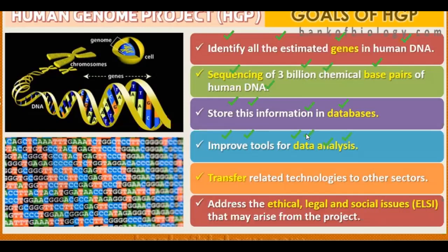The goals of HGP were set approximately 20 years ago. There were many dreams, and with their goals, almost all of these goals are true today. Women genetics is a field that has a lot of scope. Another goal was to transfer the related technology to other sectors — microbiology, medicine, pharmacy — so that this information can be used in different fields.